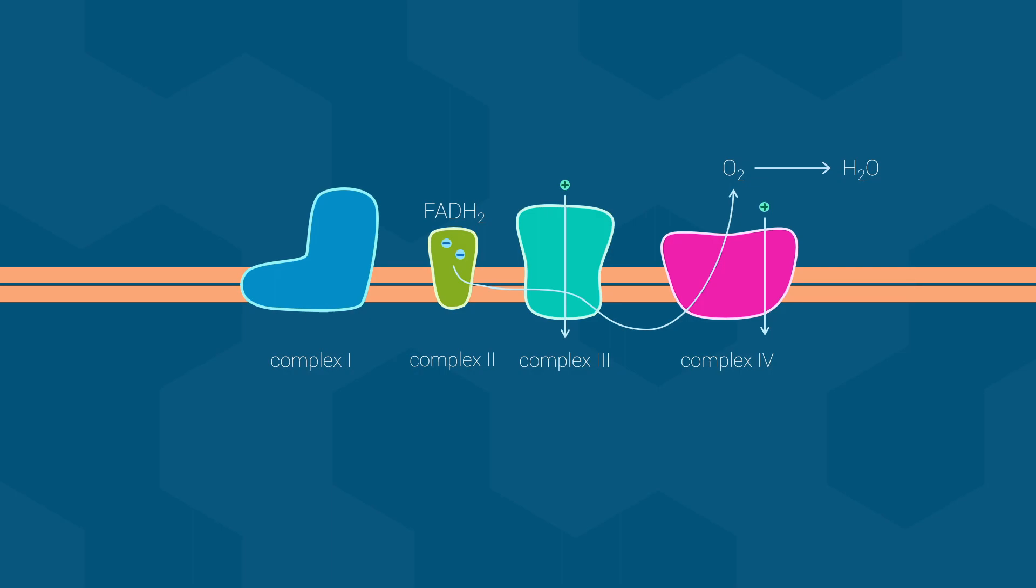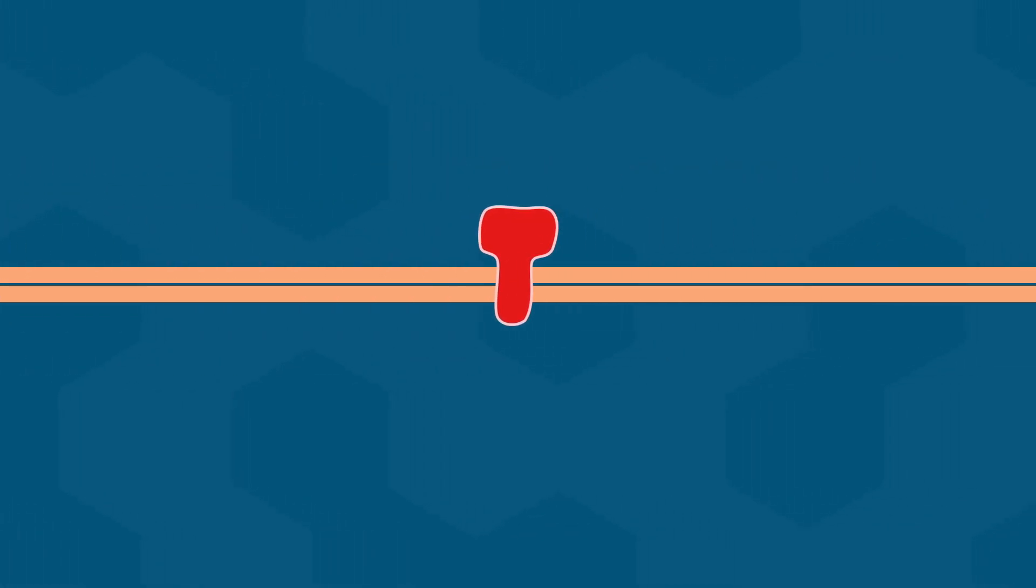So by this point, the cells have used redox reactions to transfer a lot of potential energy from glucose into a proton gradient. So that begs the question, how does all of this potential energy end up as ATP? Well that happens in the very final stage of oxidative phosphorylation.